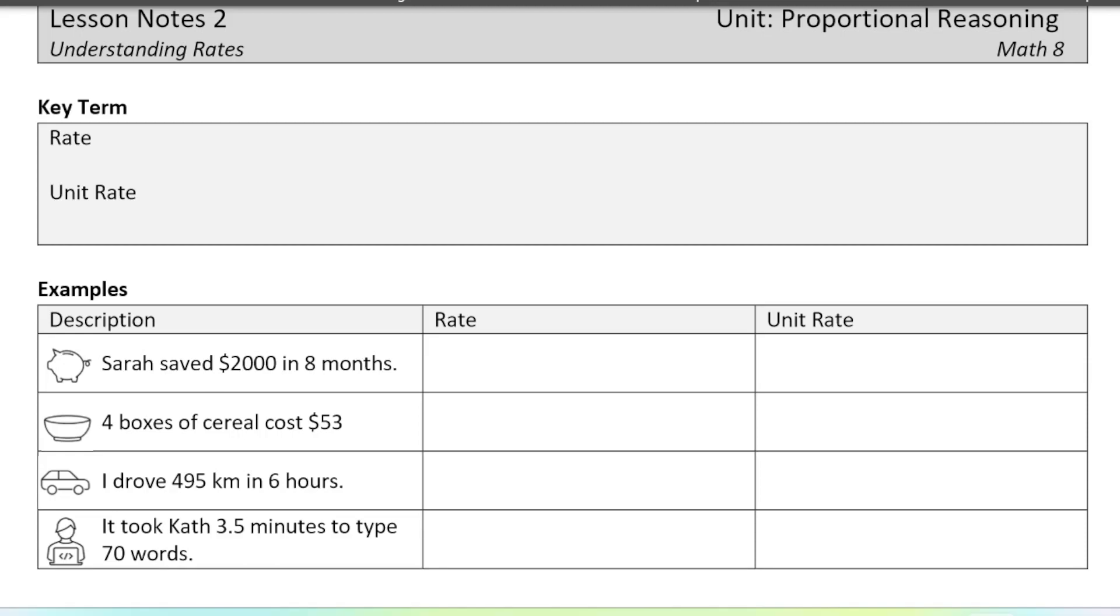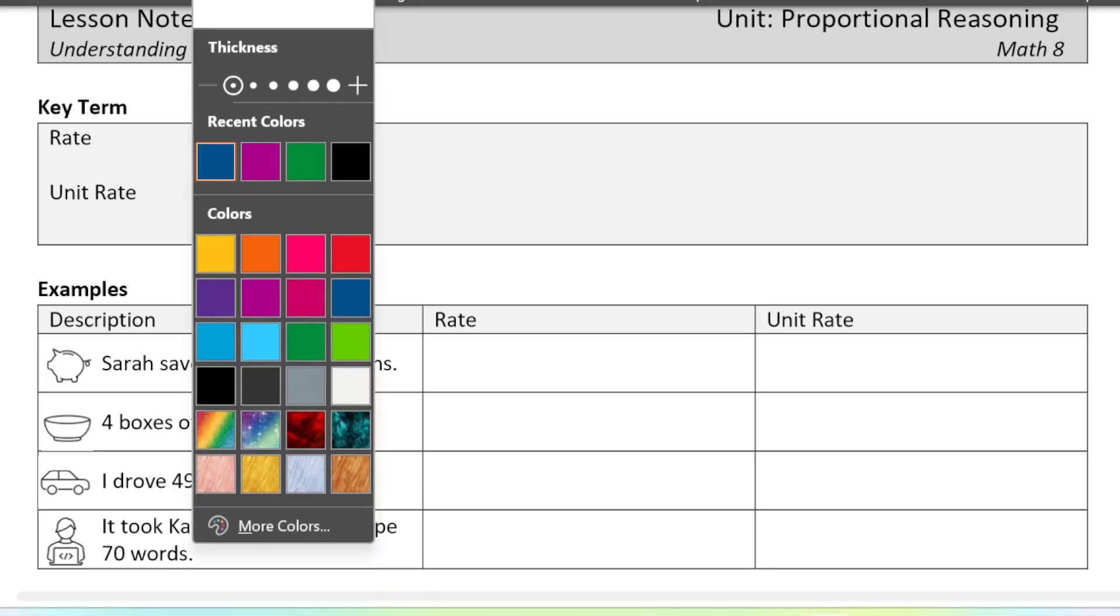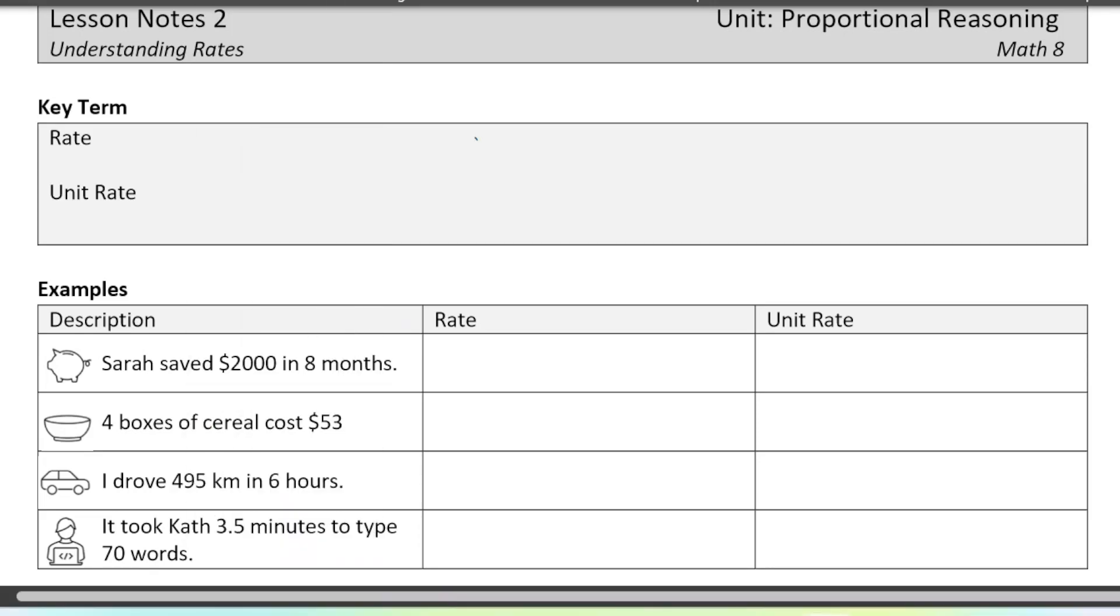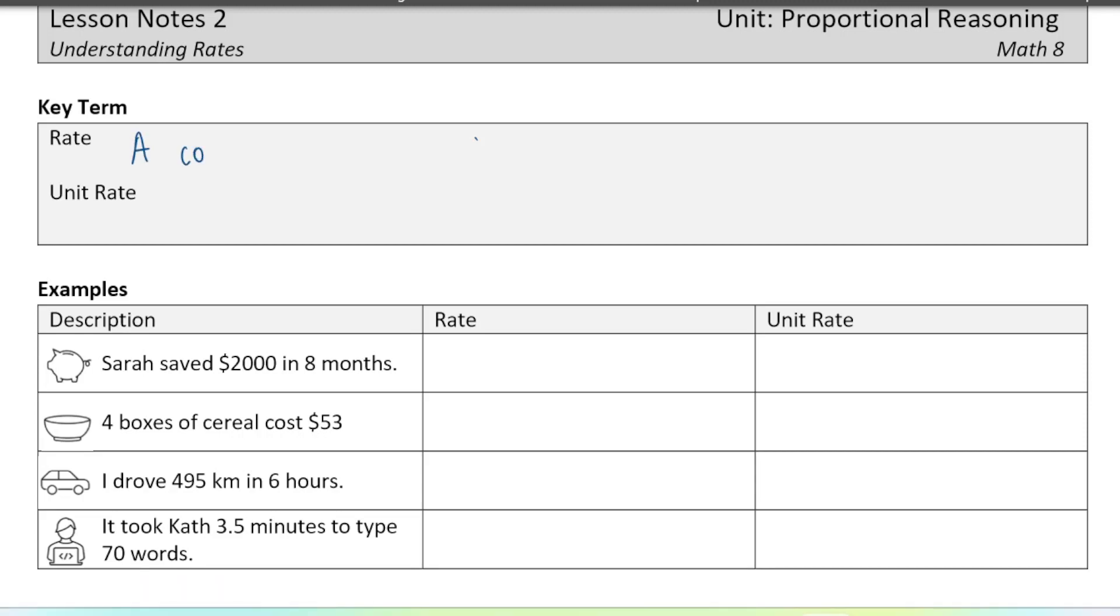All right, so this is lesson two in the proportional reasoning unit and we're looking at rates today. So let's talk about what a rate is first. A rate is like a ratio - you're comparing two numbers, but these two numbers have to have different units of measure.